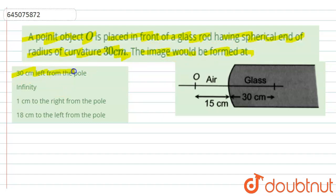We have 30 centimeter from the left of the pole, infinity, 1 centimeter to the right from the pole, 18 centimeter to the left from the pole. And this is the figure here.